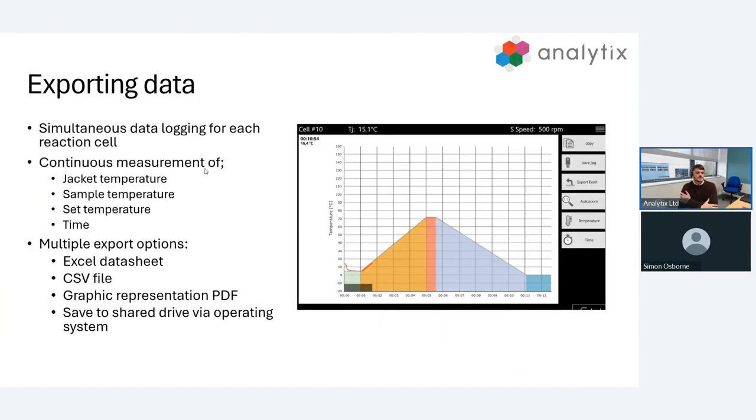Exporting data is a really strong factor with Excelsis. We have simultaneous data logging for all 10 of the reaction cells throughout the reaction, with continuous measurement of jacket temperature, sample temperature if we're using external thermoprobes, the set temperature or target temperature, and the time. You can see the graph on the right there. This is what you'd be able to see mid ramp cycle. You can see we're about at the minute and a half time point. The red trace is your jacket temperature and it's following the set temperature of our ramp with the different color coded stages.